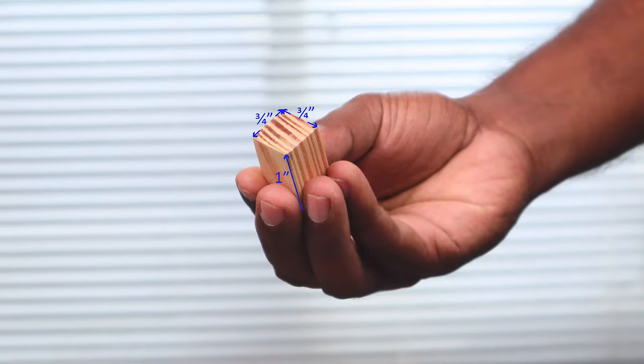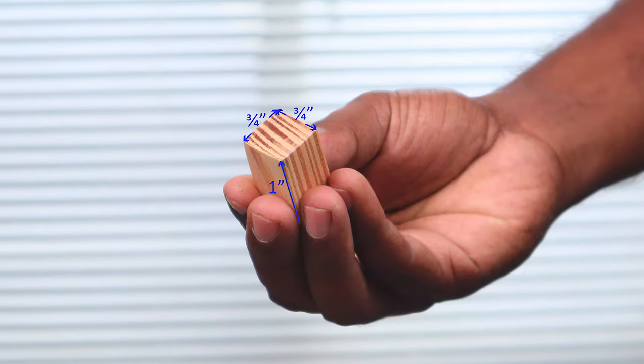To make the taper cut you need to attach a piece of scrap wood to the end of the wood piece you wish to taper cut. The width of this piece of scrap wood determines the taper you get from the cut.